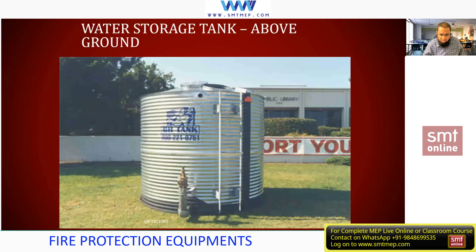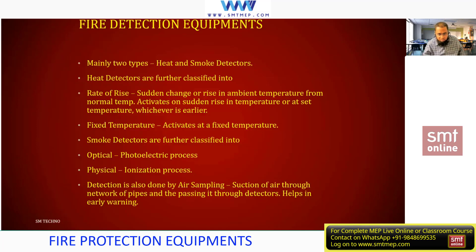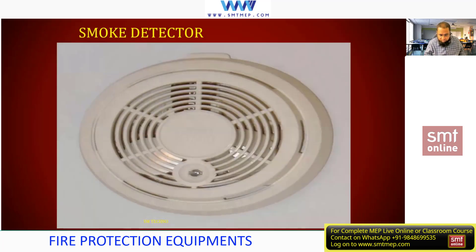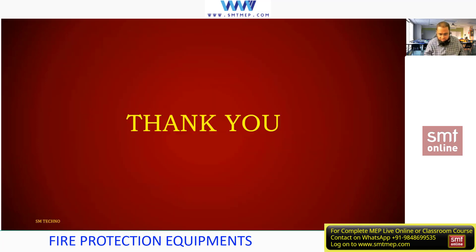Next, detectors - under the detection system. Here is one example of a heat detector, which is used to detect heat. Similarly, a smoke detector is used to detect smoke. You'll also find a beam detector, which is used to sense smoke, and a flame detector. Different types of detectors come under NFPA 72 - the fire alarm system.